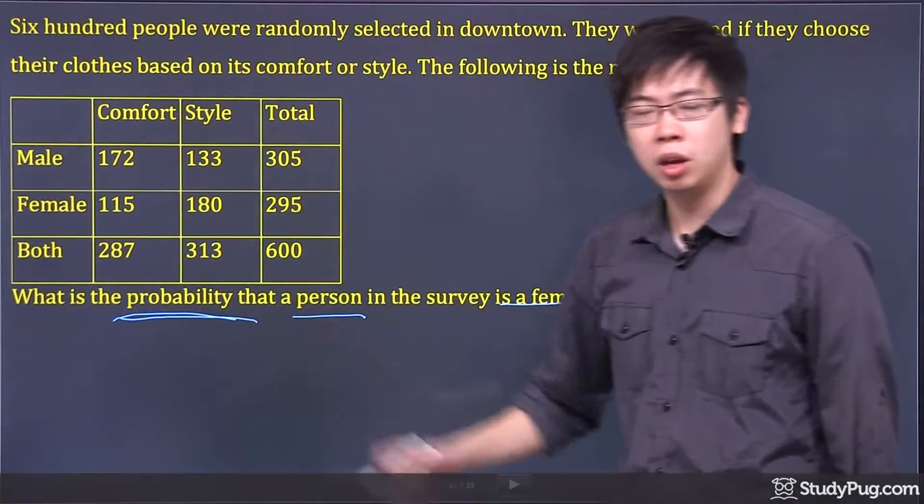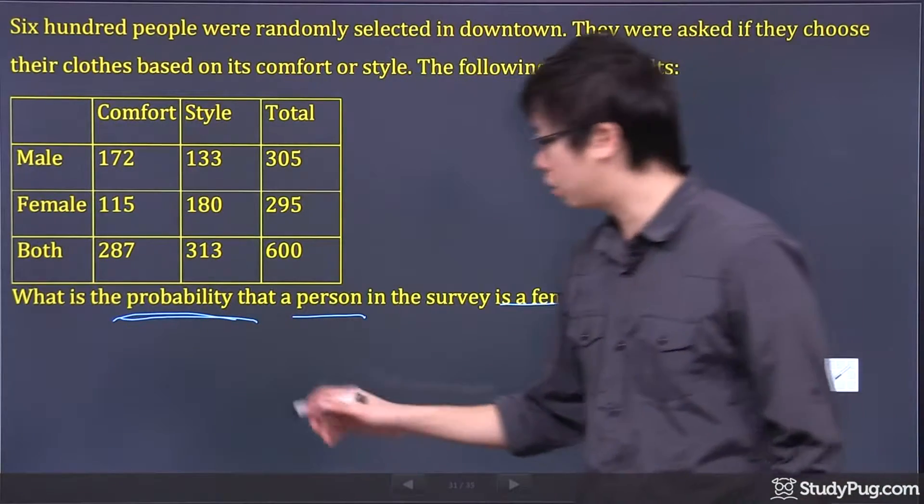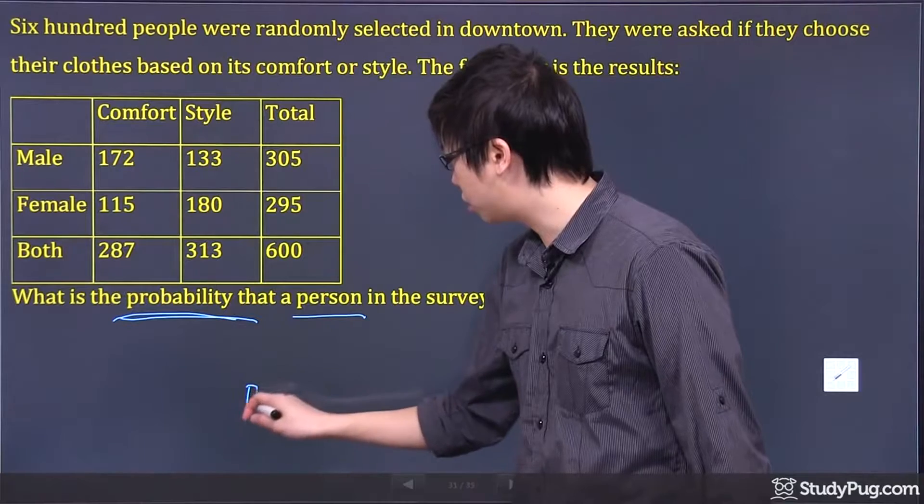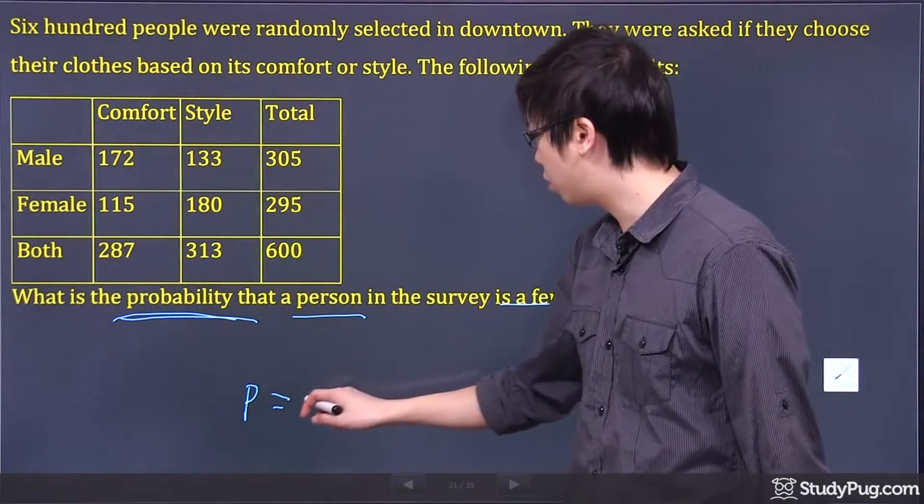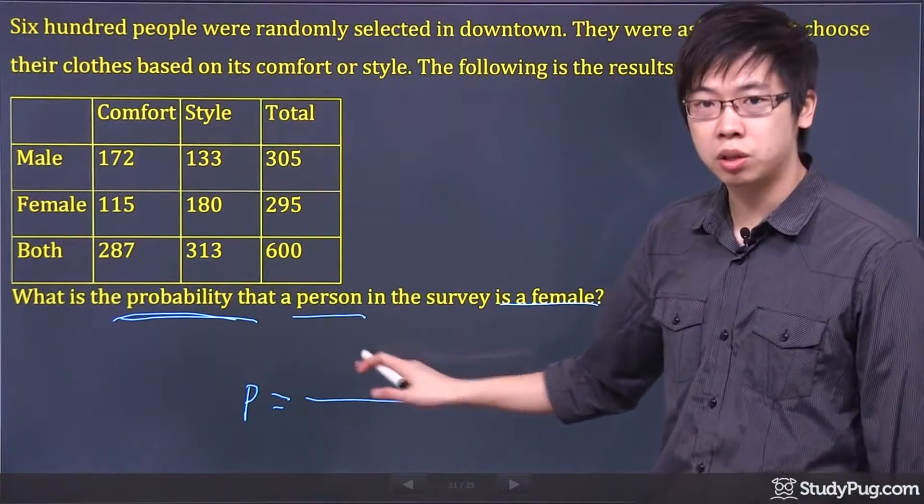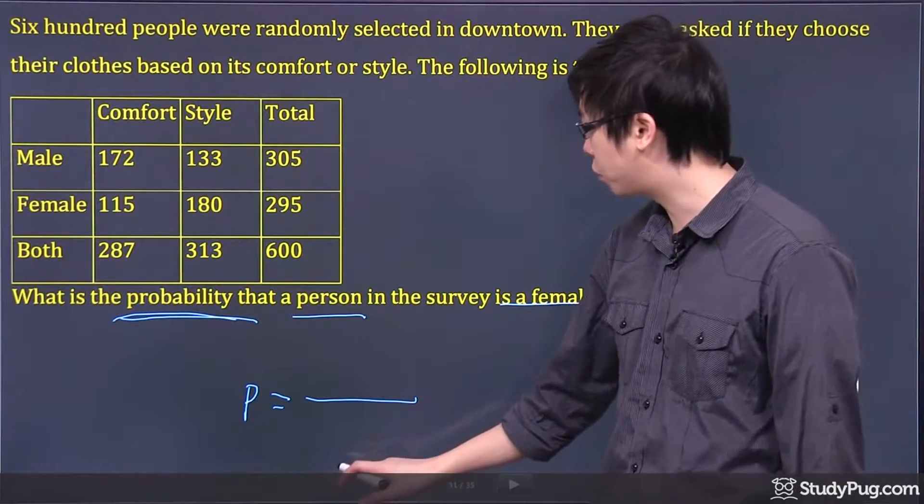When looking for the probability, there's something that you have to know. The probability is just something that you're interested in on the top, divided by the total population at the bottom.